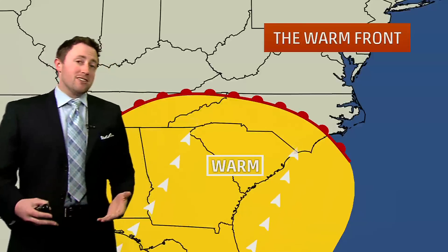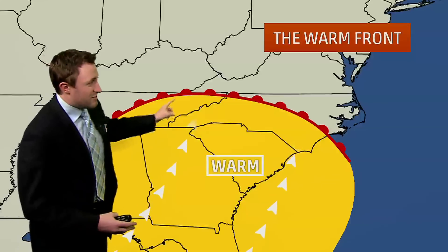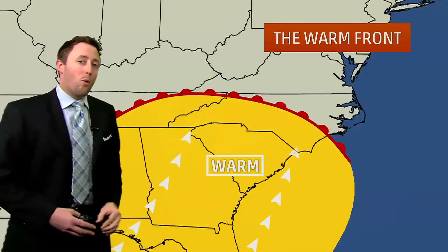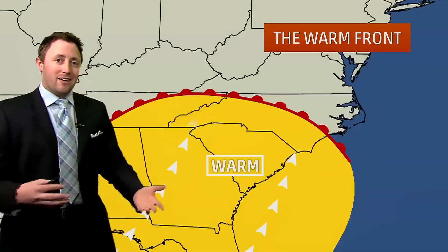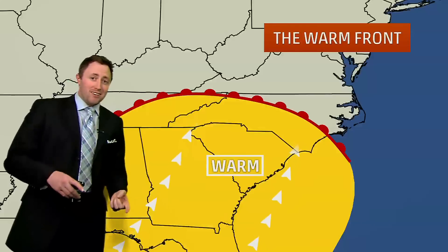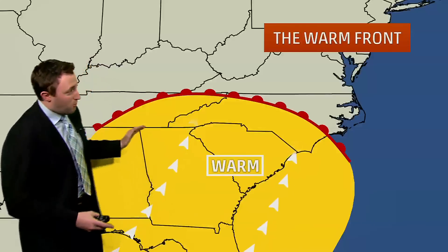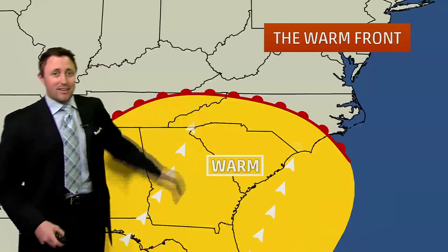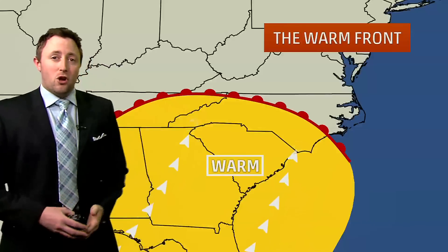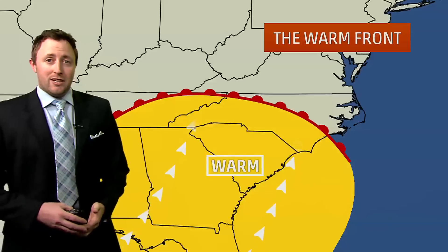The best way to remember it is they're like little half suns, so they're always denoting warmer air — sun, warmth, warm front. That's how we denote where a warm front lays.